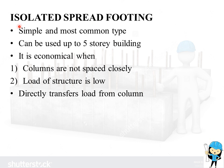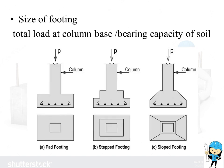First, we are going to see about Isolated Spread Footing. This is also called Independent Footing. It is the most simple and most common type of footing used in structures because it is very economical up to 5-story buildings. It is economical when columns are not spaced closely, the load of the structure is low, and the bearing capacity of the soil is high. This footing directly transfers the load from the column. The formula for finding the size of the footing is: Total Load at the Column Base divided by Bearing Capacity of the Soil.